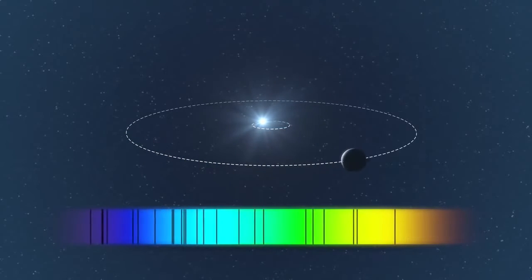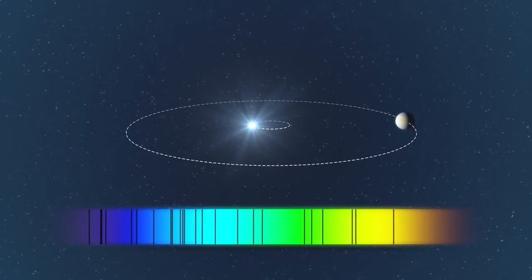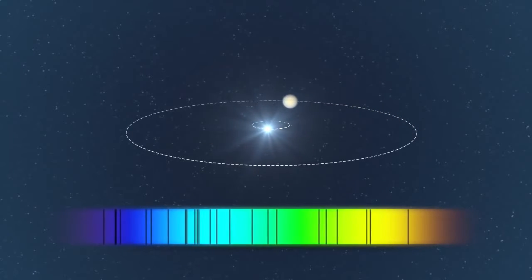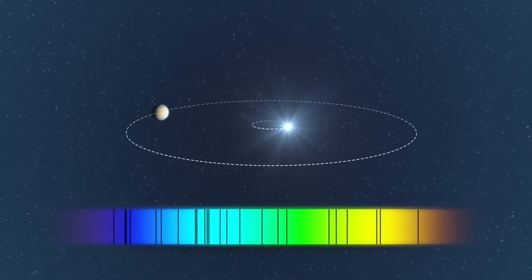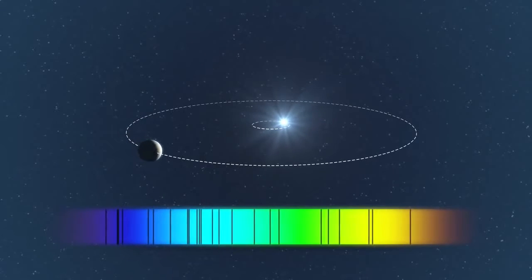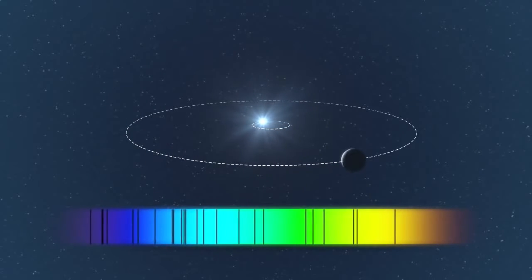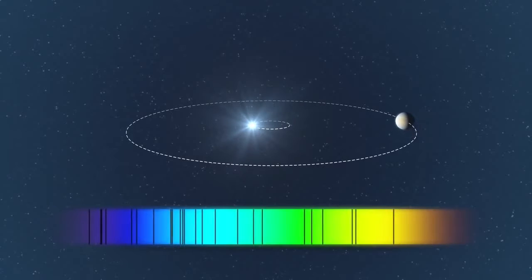A planet in orbit causes its star to regularly move backwards and forwards as seen from Earth. This creates a tiny shift of the star's spectrum that can be measured with an extremely sensitive spectrograph such as HARPS.